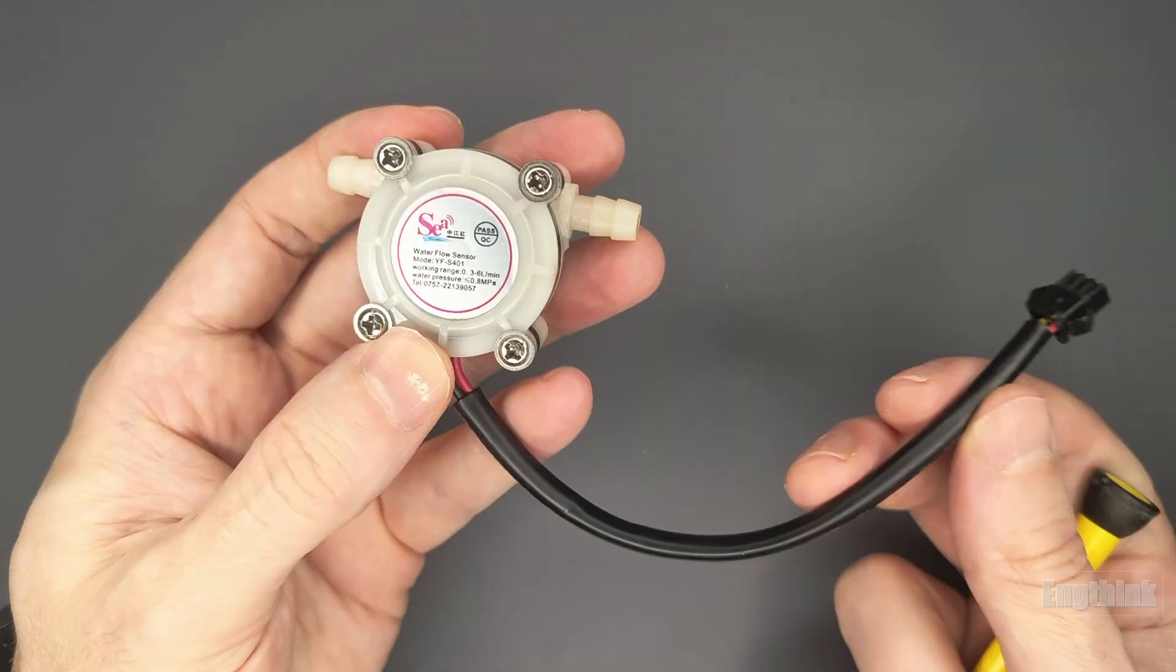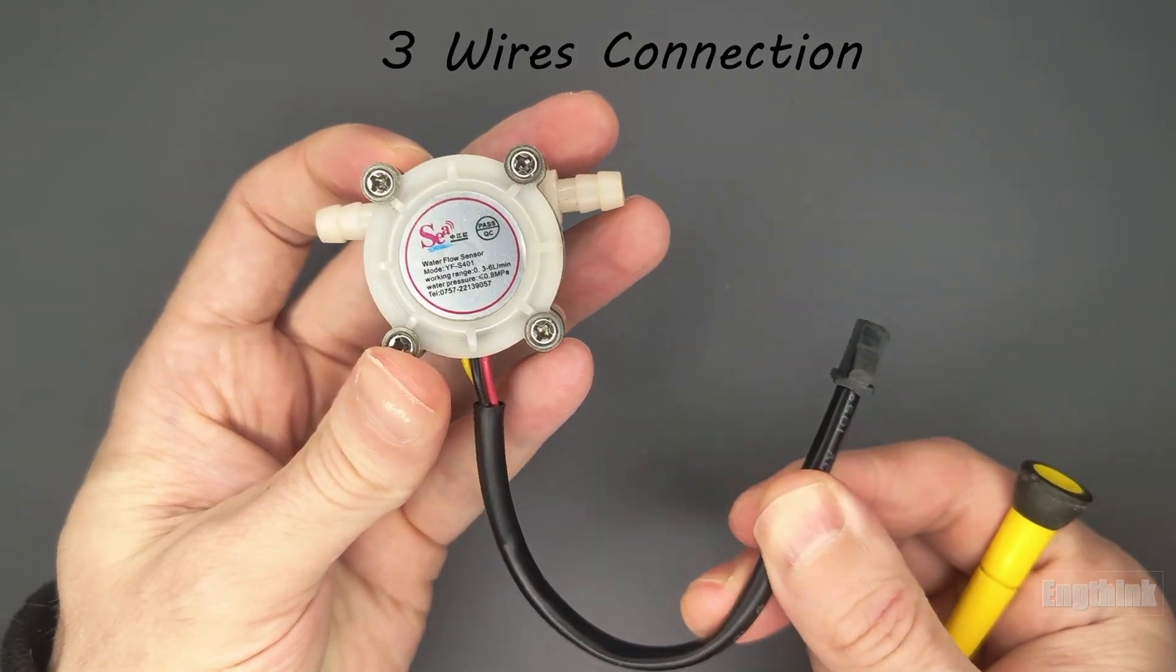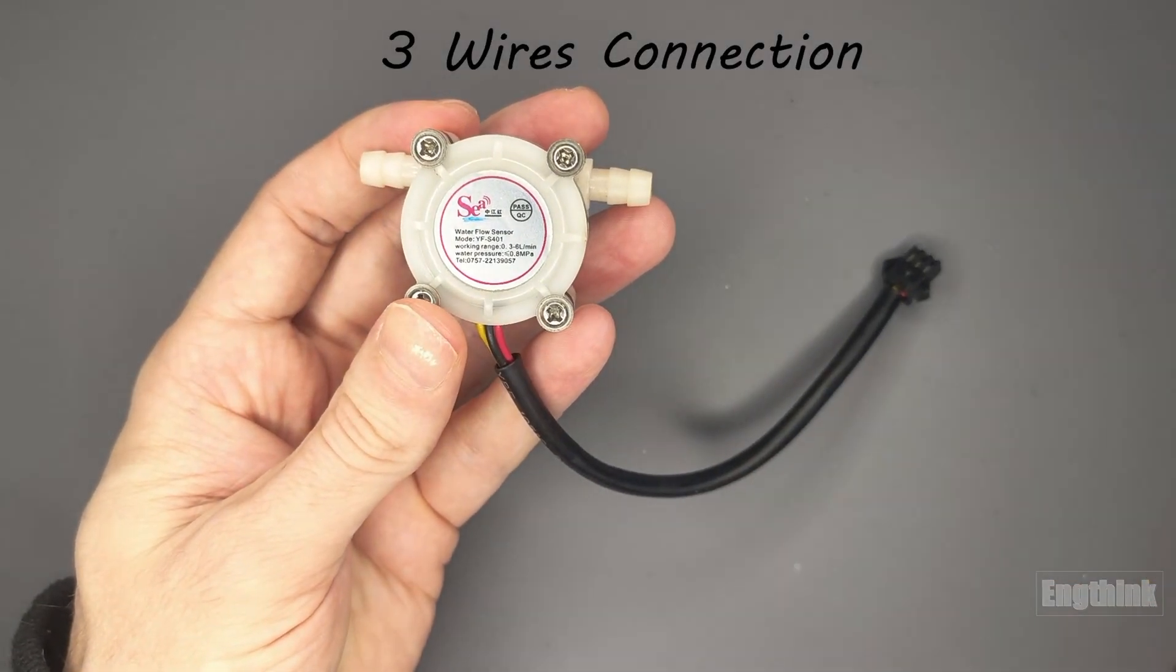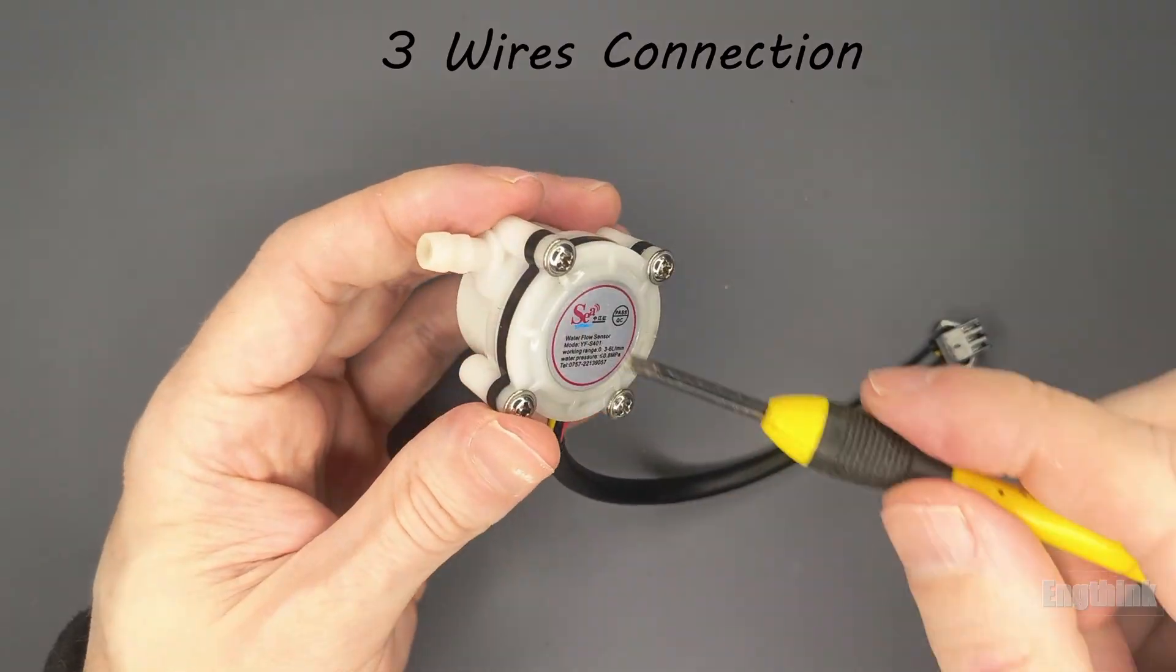Regarding the electrical connection, there are three wires with different colors: red, black, and yellow. I'll explain the wiring connections in the next section.